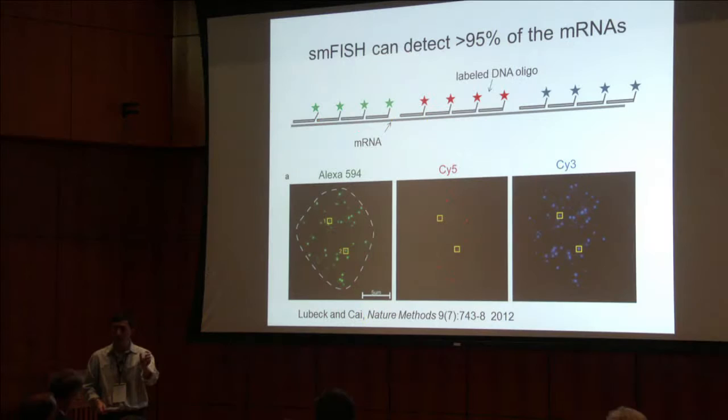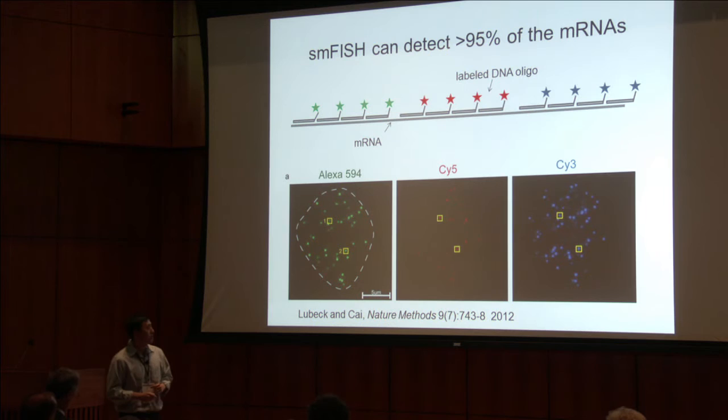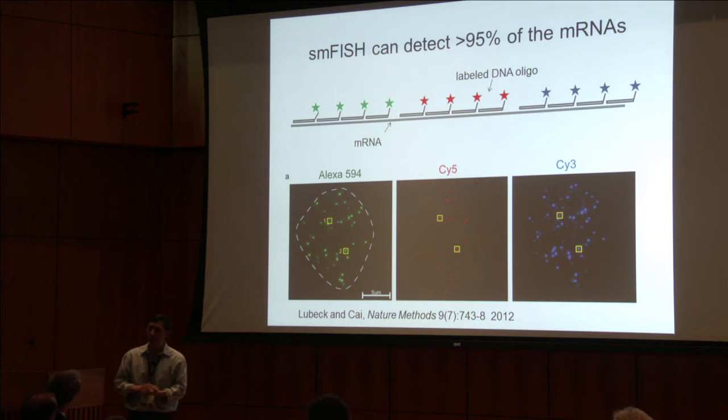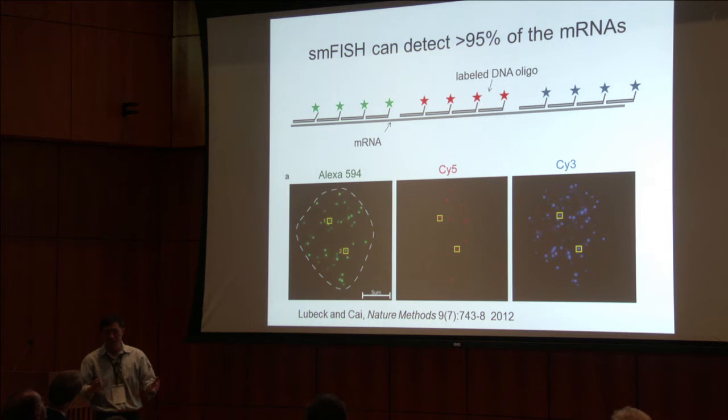Each 20-mer oligonucleotide has about a 50% chance of binding to the RNA. So if you put 20 of them on a transcript, you're virtually guaranteed to see it. A common question is about secondary structure of RNA — we find it actually does not matter very much. What limits hybridization efficiency in most cases is protein binding on the RNA, for example ribosomes, which prevent probes from hybridizing. In general, any RNA that can be detected can be detected very efficiently with this method.